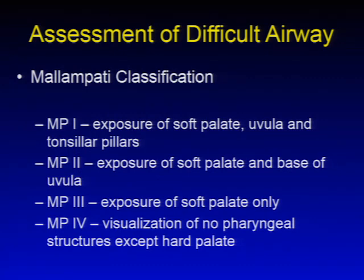The Mallampati classification is useful. A Mallampati one is exposure of the soft palate, entire uvula, and tonsillar pillars. Mallampati two is exposure of the soft palate and just the base of the uvula. Mallampati three is exposure of the soft palate only. Mallampati four is visualization of no pharyngeal structures except the hard palate. As classifications go from one to four, it becomes potentially more difficult to intubate.